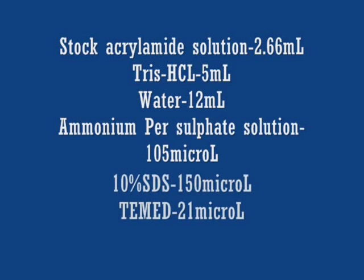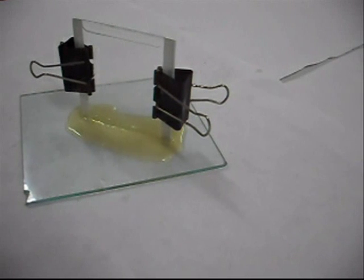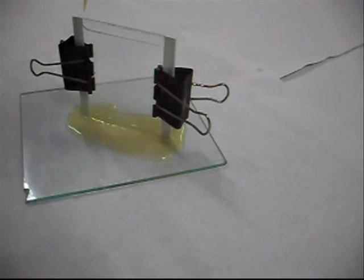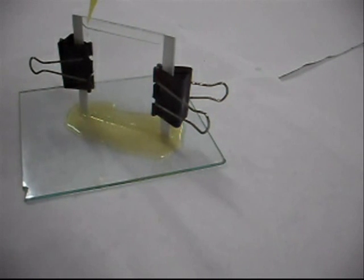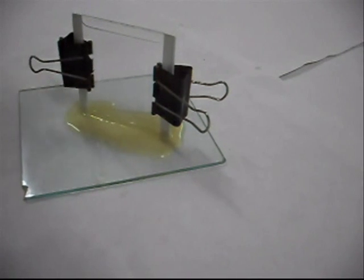The stacking gel is prepared with the following chemicals. The stacking gel is poured over the separating gel and the comb piece is placed immediately over it for well formation.